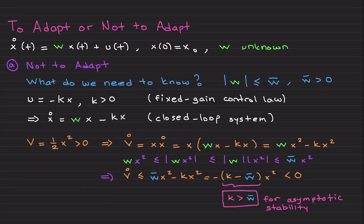Today's video is titled 'To Adapt or Not to Adapt.' We want to control a scalar system where w is the uncertainty and u is the control signal. In the previous video I discussed the differences between robust control and adaptive control. Before proceeding further, we need to understand whether to use a fixed gain control law versus an adaptive control law, and the main benefits of the adaptive principle in this simple context, so we can generalize to higher order systems in following videos.